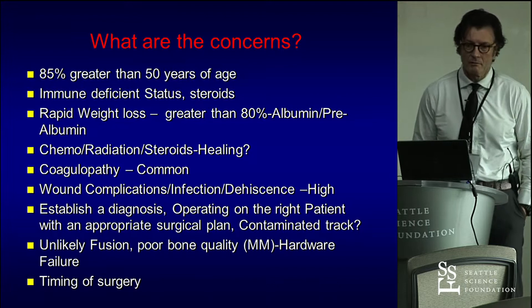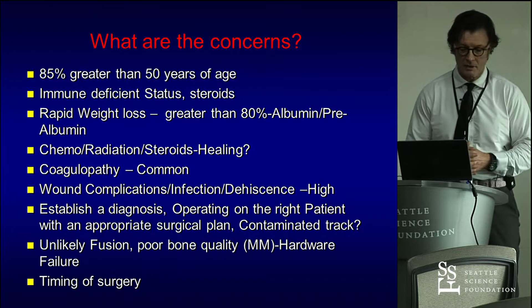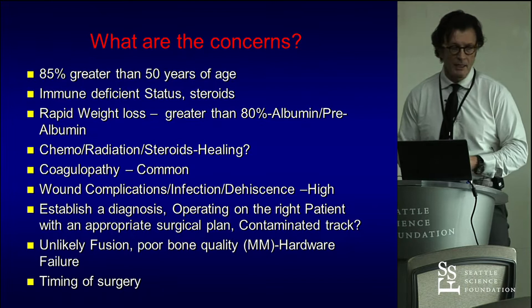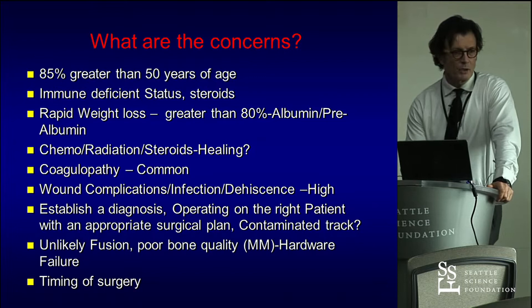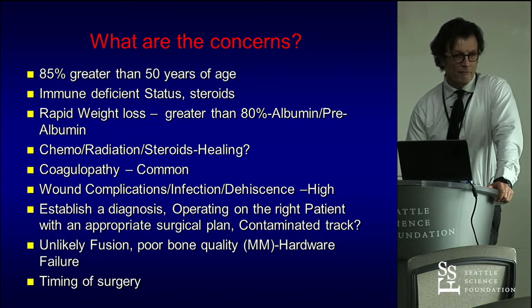What are the concerns with these patients? There's a laundry list of problems to consider before you even think about what to do. They are elderly most of the time, immune deficient, on steroids from previous cancer, with rapid weight loss. They may have already received chemo, radiation, and steroids, raising concerns about healing. Many are coagulopathic, on chemo, with low platelet counts. Wound complications — infection and wound breakdown — are very high in these patients.